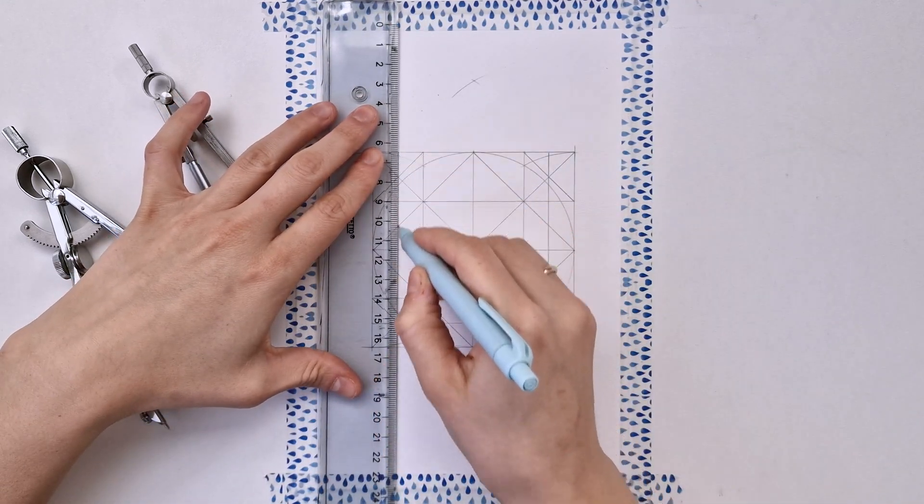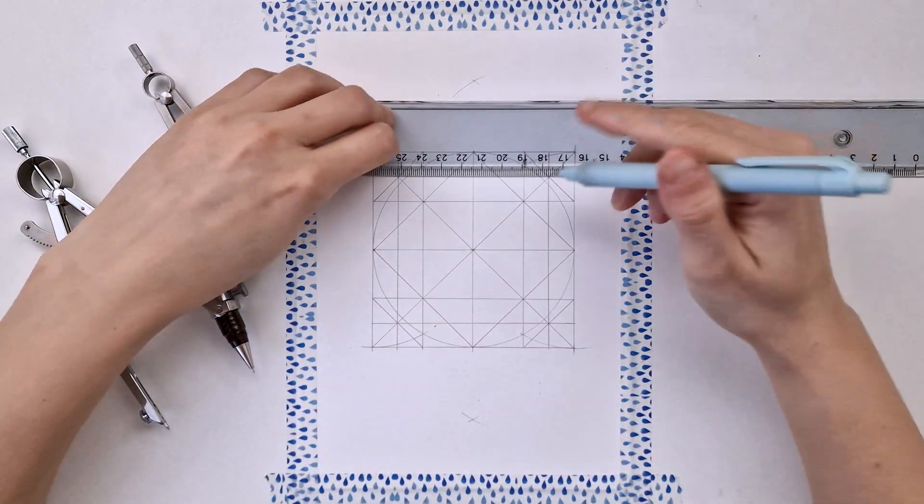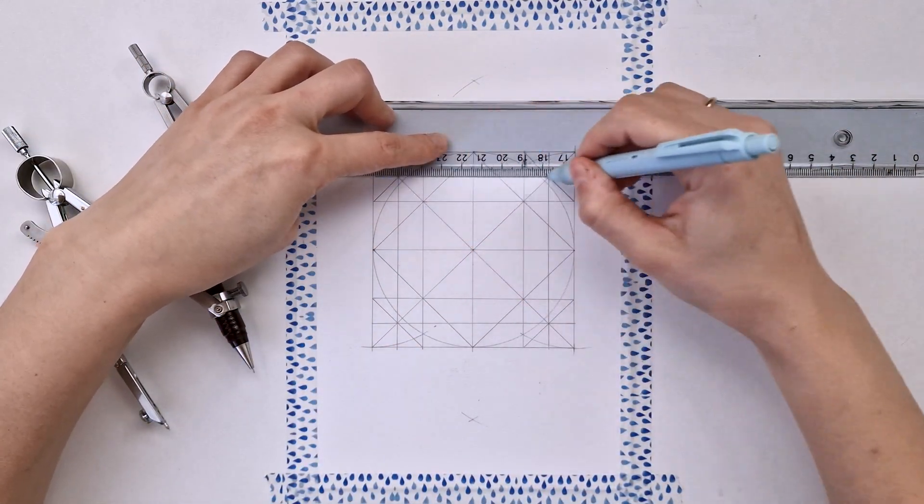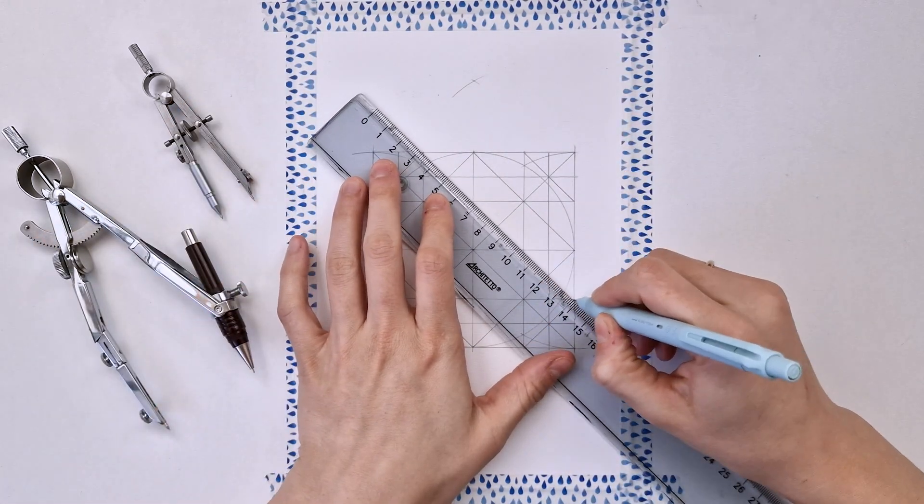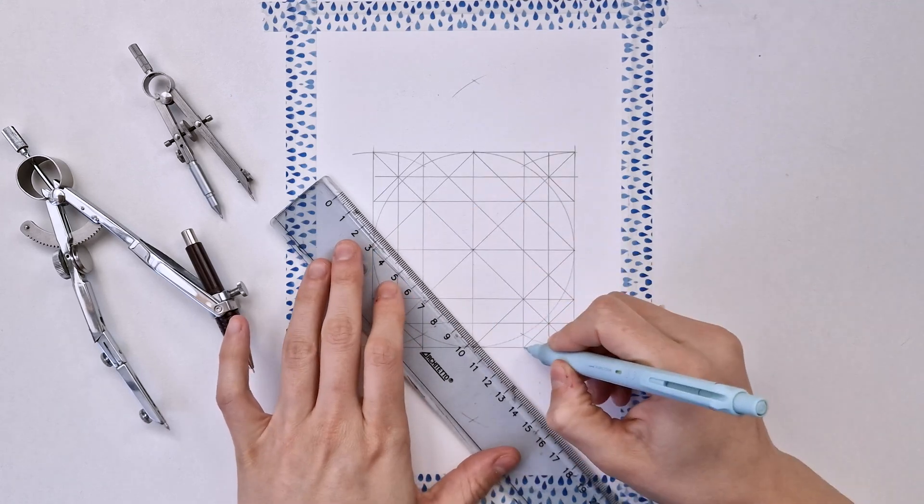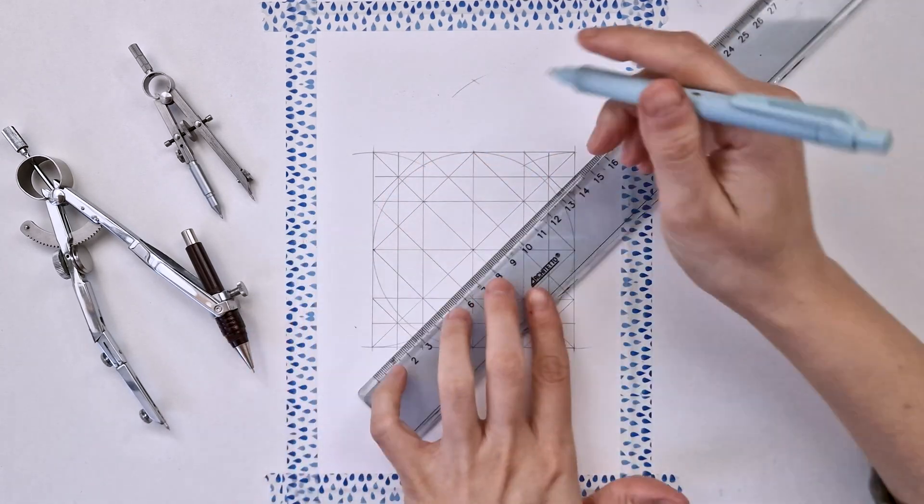And you see now I'm missing the central part, so I'm just gonna keep adding diagonal lines like this and the other side as well.